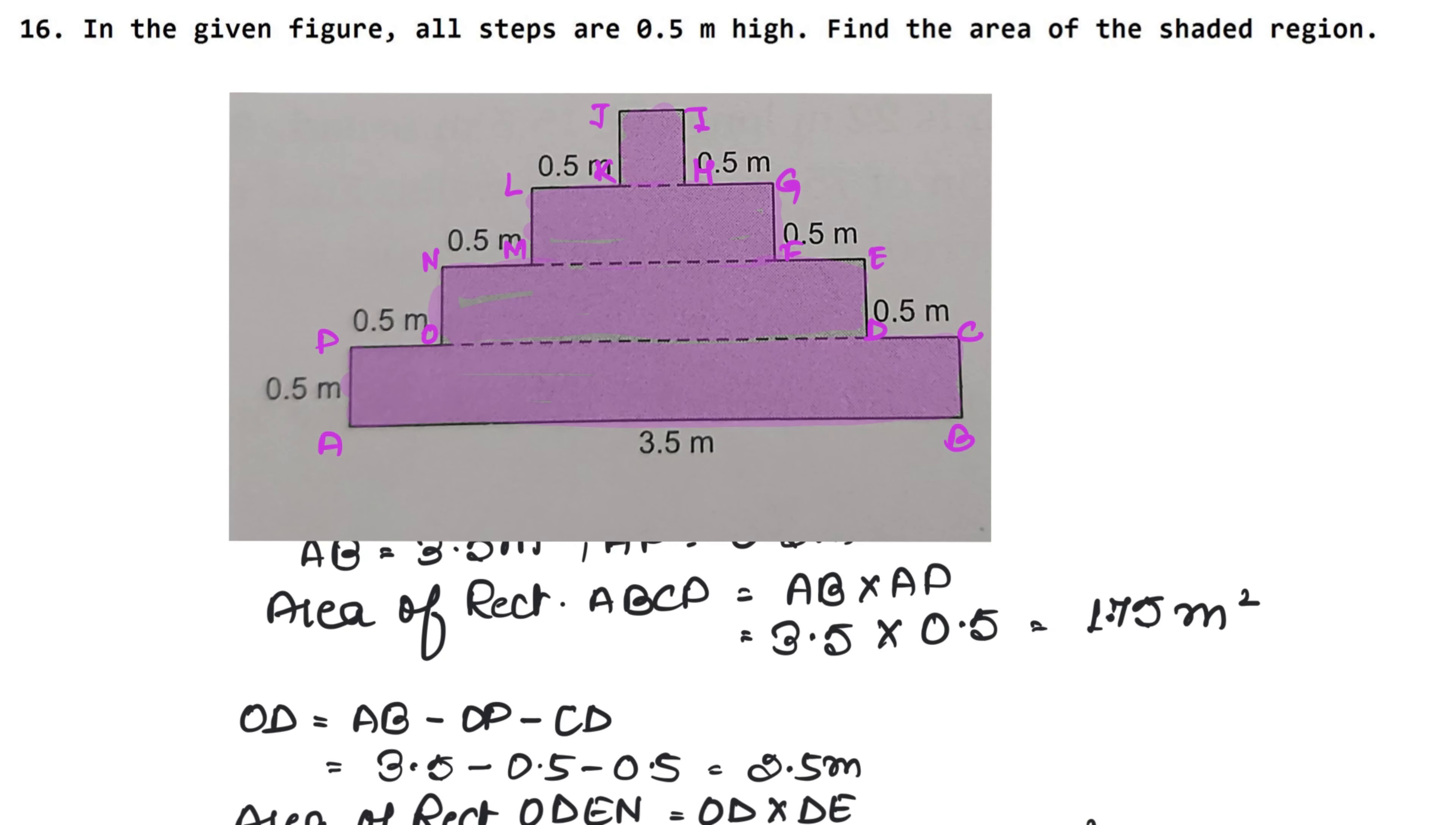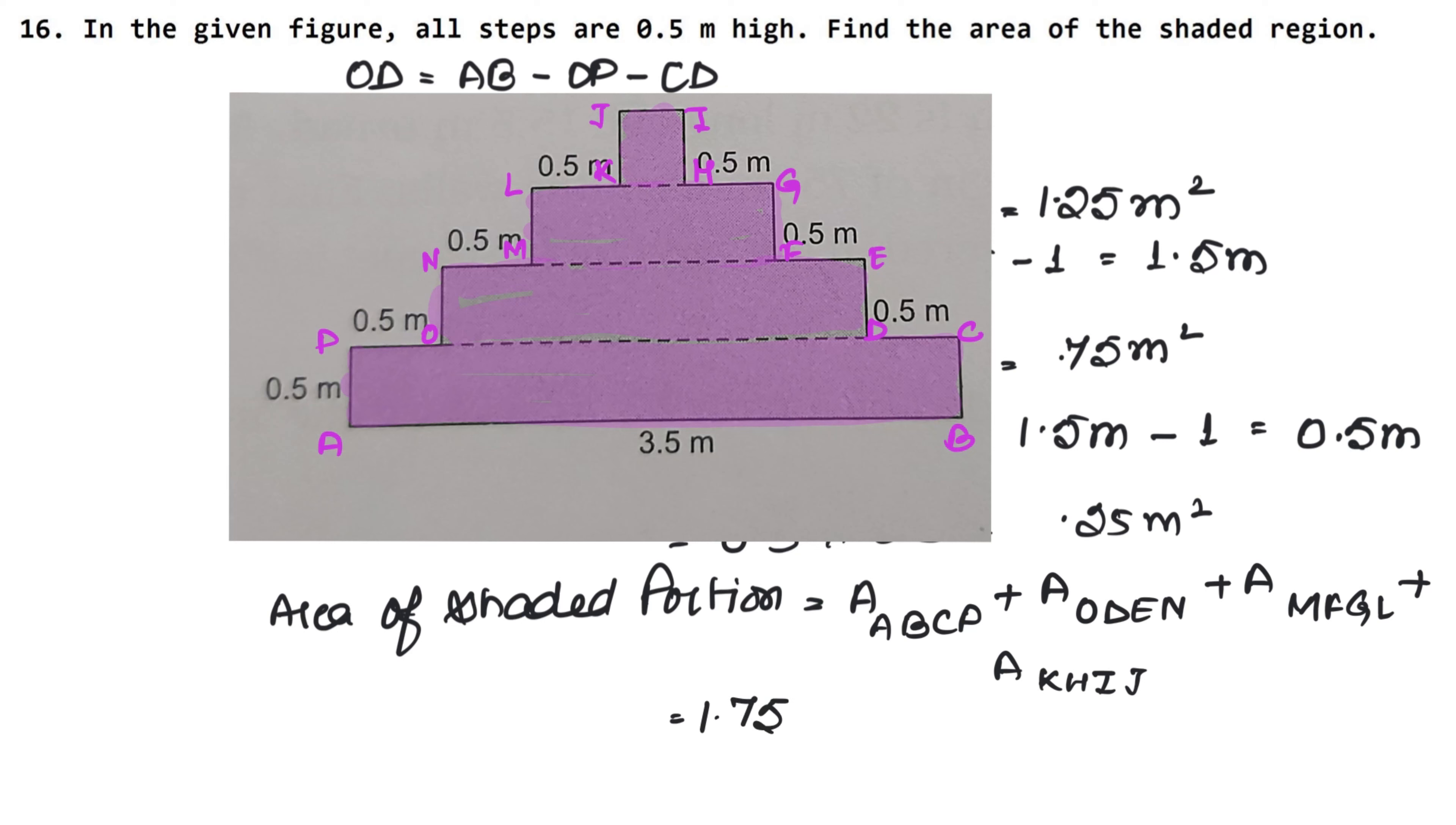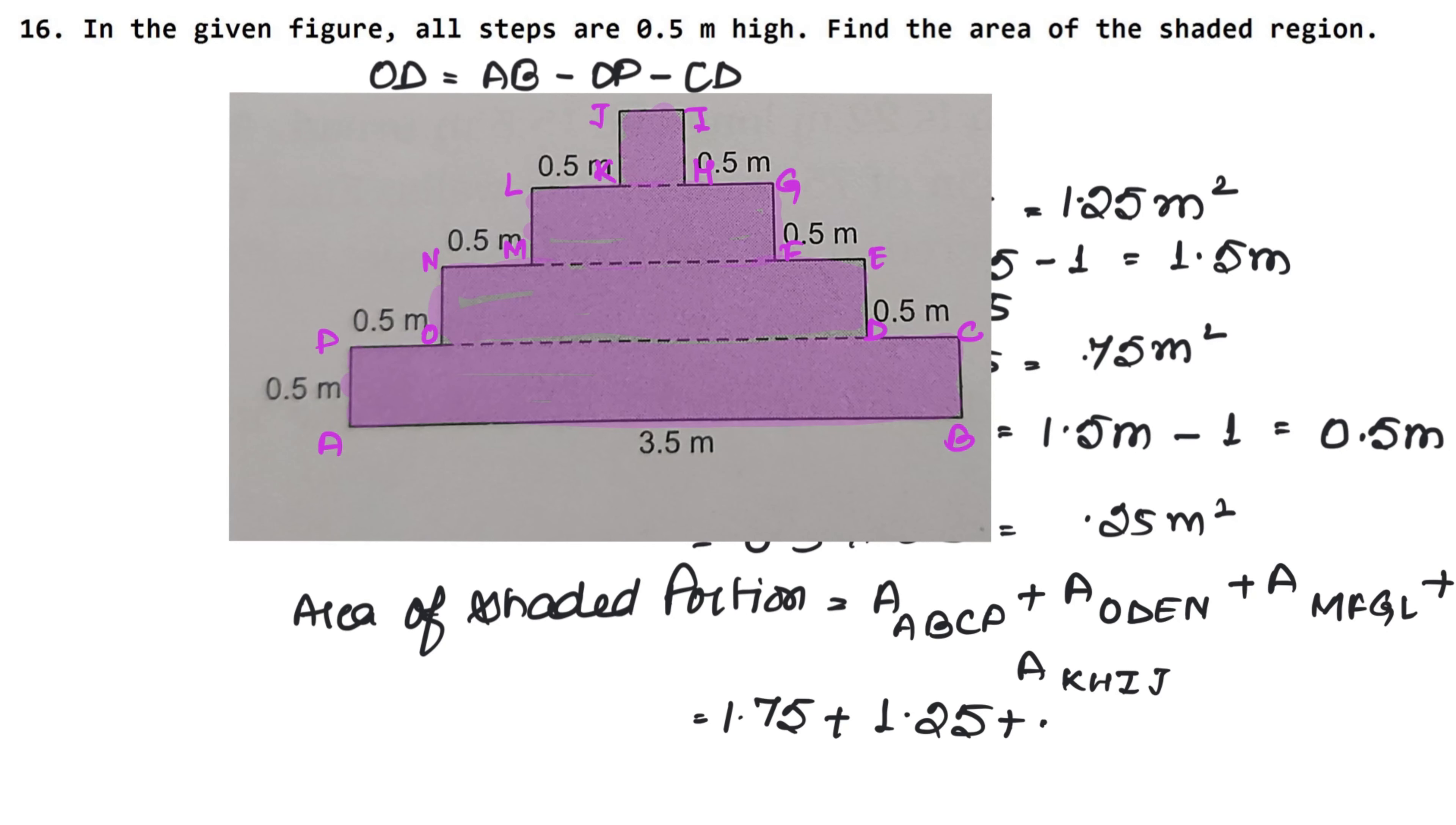ABCP area is 1.75 meter square, and ODEN area is 1.25 meter square. So, 1.75 meters square plus 1.25 meters square plus MFGL area is 0.75 meters square and KHIJ area is 0.25 meters square. How much area is the shaded portion?